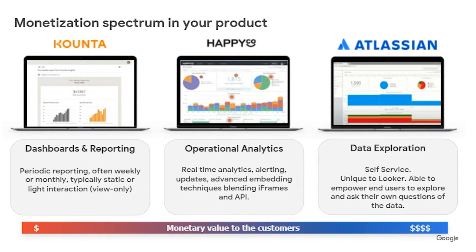Now when we think of a monetization spectrum in your product — now that we know a baseline of what direct and indirect monetization is — this is just an example of how you can start to think of the value you're delivering to your customers. When we look on the left-hand side, if we're thinking of very simple dashboard and reporting as low value, and go all the way to the high value of data exploration and self-service, we can start to think of monetizing your product in these different ways. You can also think of this as a bronze, silver, and gold tier of analytics.